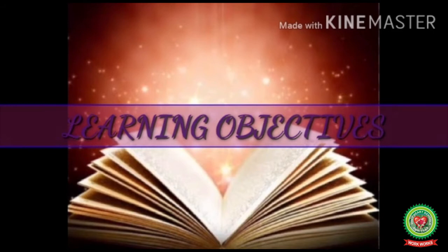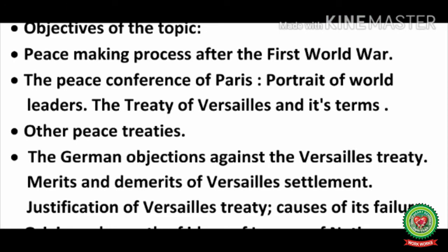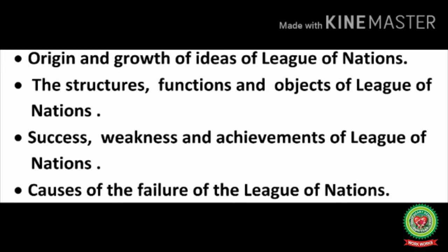Let's discuss the objectives of this topic. The objectives are: to discuss the peacemaking process after the First World War; the Peace Conference of Paris; portraits of world leaders; the Treaty of Versailles and its terms; other peace treaties; German objections against the Versailles Treaty; merits and demerits of the Versailles settlement; justification of the Versailles Treaty; causes of its failure; origin and growth of the idea of the League of Nations; the structure, functions and objects of the League of Nations; its successes, weaknesses, achievements; and causes of failure of the League of Nations.